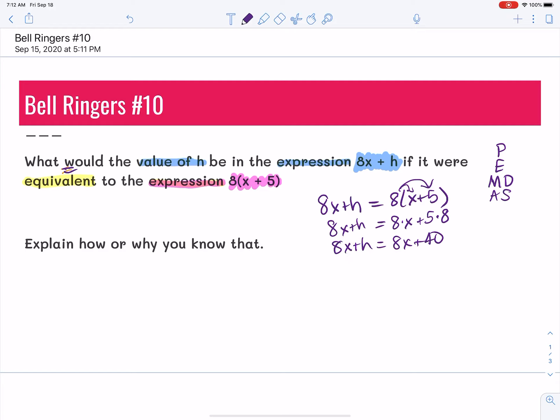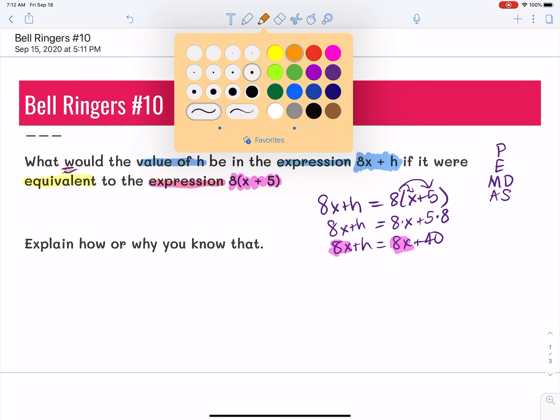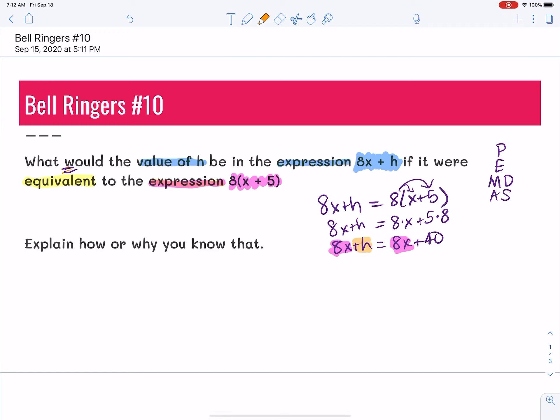And at this point, I should be able to recognize that one side is equal to the other side. So this has an 8x. This has an 8x. So that would mean that the only thing that h could be is what's left here, which is 40.